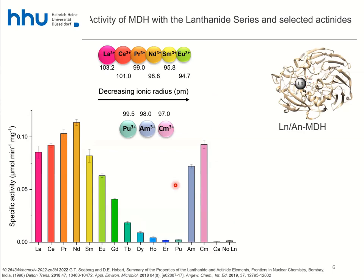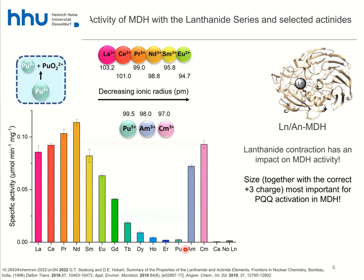Quite interestingly, these enzymes can also bind americium and curium, which have very similar ionic radii and the same oxidation state as the lanthanides — and they give very similar activities. So these enzymes designed by nature for lanthanides also work with some actinides. They don't work with plutonium, because even starting with Pu³⁺ — which has the perfect ionic radius — plutonium's rich oxidation chemistry means it oxidizes and the enzyme stops functioning. The lanthanide contraction is clearly important here.